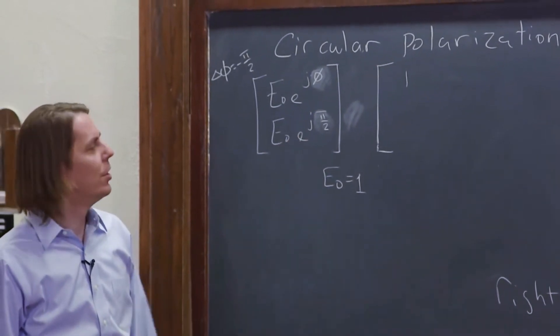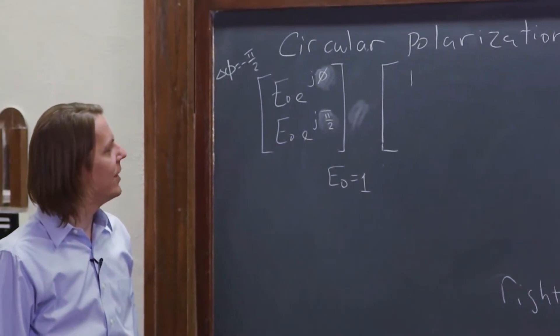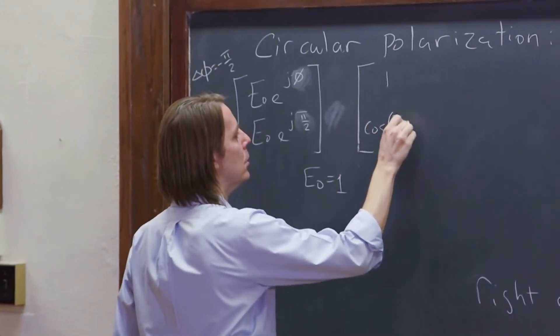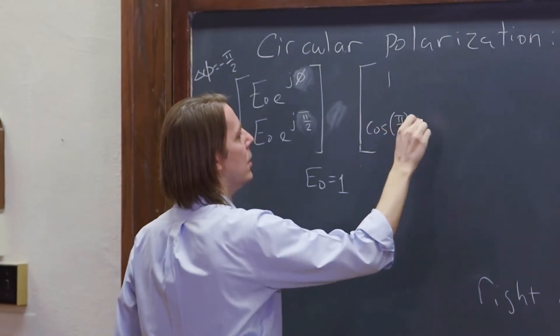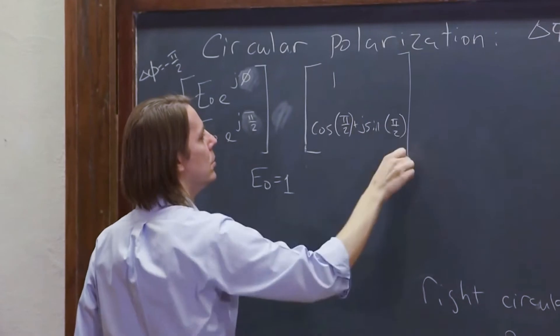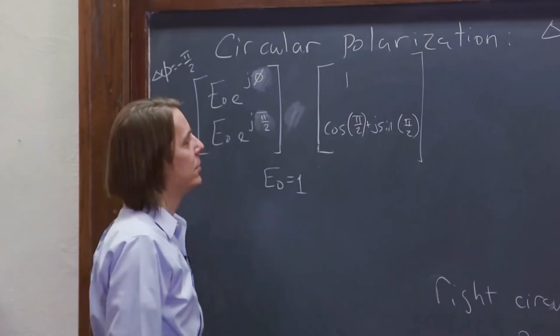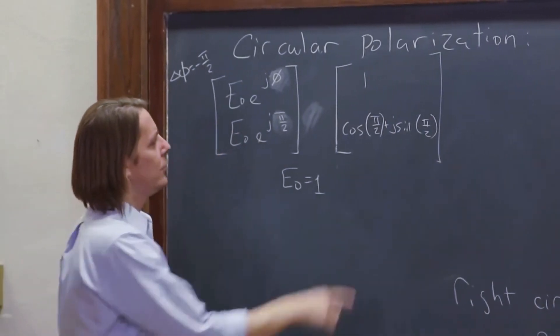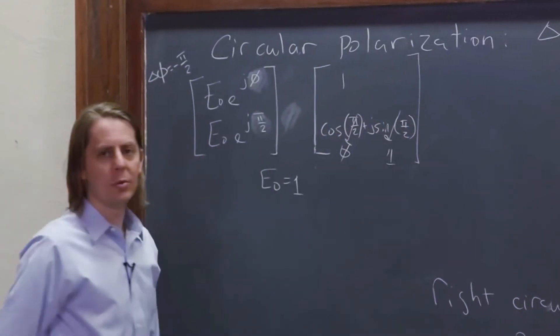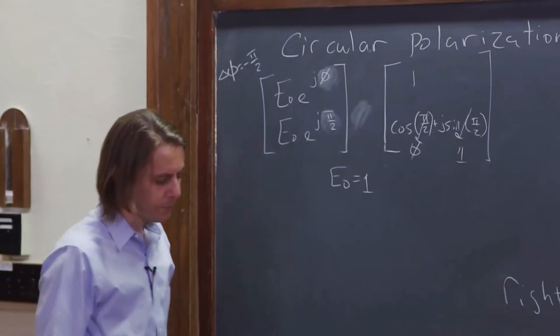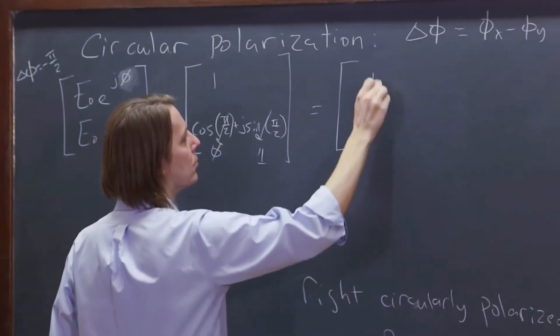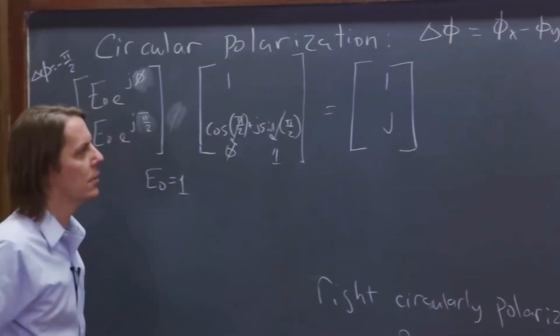And that's equal to cosine of pi over 2 plus j sine pi over 2. That's the Jones vector. Well, let's see, cosine of pi over 2 is 0, sine of pi over 2 is 1. So it's equal to 1 over j, like that.